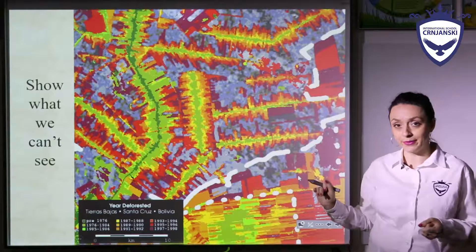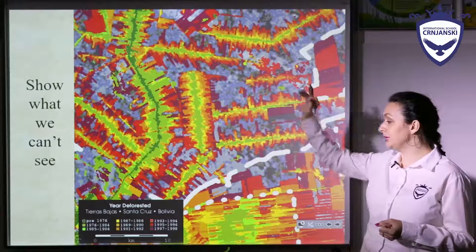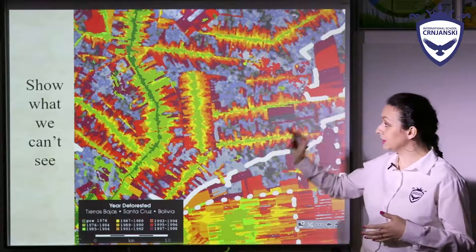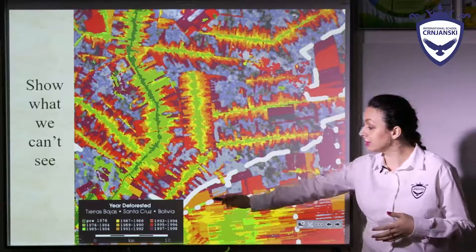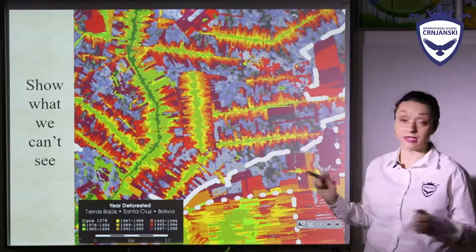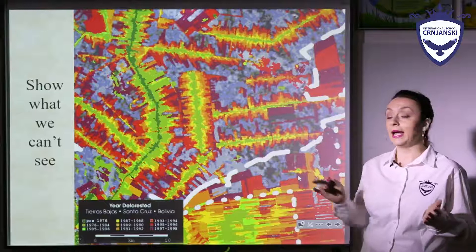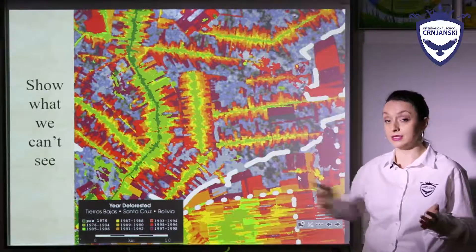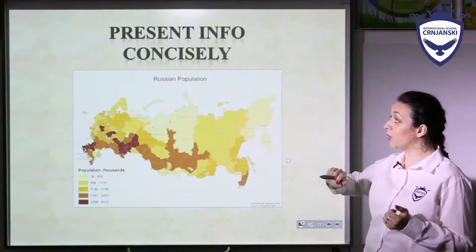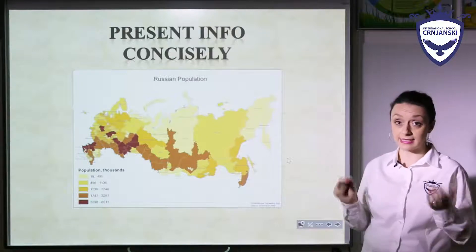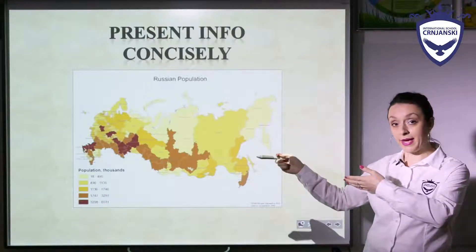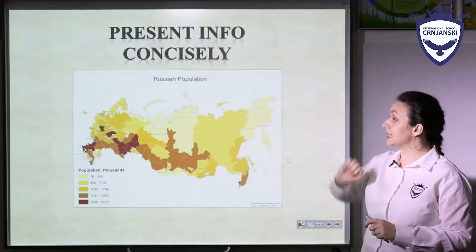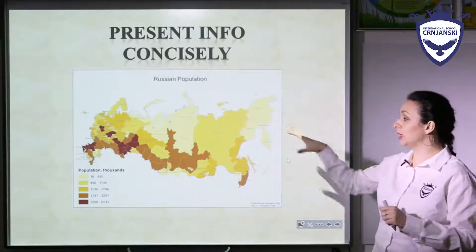For example, this colorful map presents some kind of deforestation, and each different color represents a different time period, as you can see in different areas of a country. You can check the relationship between these places regarding this information. When we want to present something concisely, we use maps — like here, where we have a map of Russia showing Russian population.